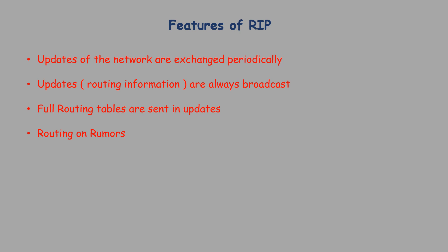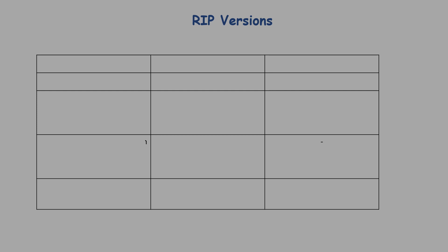The fourth feature is that routers always trust routing information received from a neighboring router. This is also known as routing on rumors. Currently there are three versions of RIP: RIP version 1, RIP version 2, and RIPng.